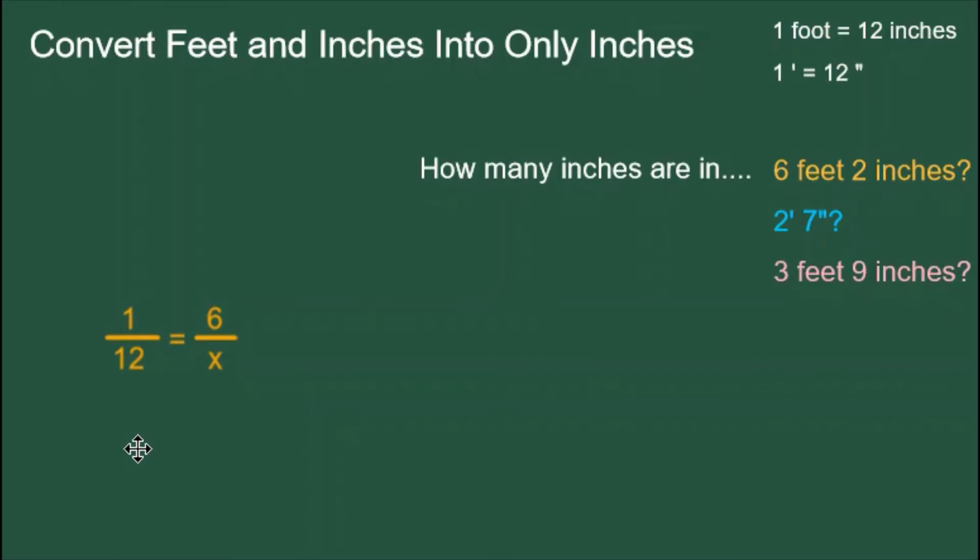Using the conversion factor 1 foot equals 12 inches on the left side of my proportion, I put 6 for 6 feet on the top right. Cross multiplying top times bottom equals bottom times top gives me 1x equals 6 times 12 or x equals 72 inches. Then I add the 2 inches and I get 74 inches. So 6 feet 2 inches is 74 inches.